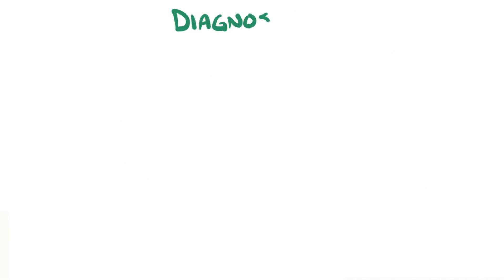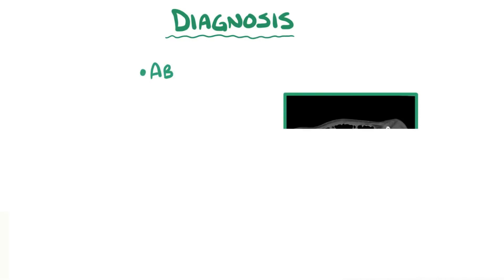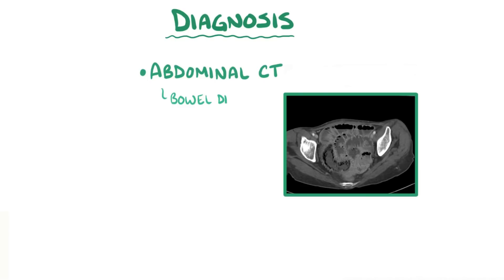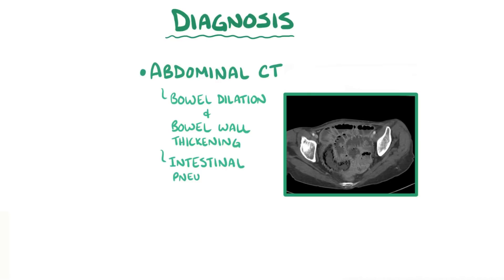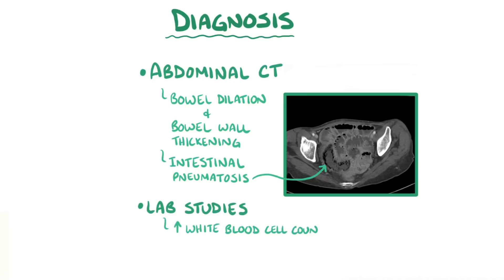Early diagnosis of small bowel ischemia and infarction is crucial. An abdominal CT scan can show bowel dilation, bowel wall thickening from edema and inflammation, as well as intestinal pneumatosis, which refers to air in the bowel wall. CT angiography can help visualize blood flow through the small intestines. Typically, lab studies are also done, and these show a high white blood cell count and metabolic acidosis.